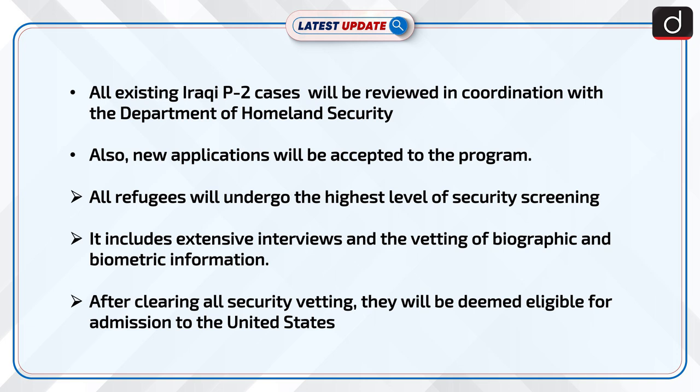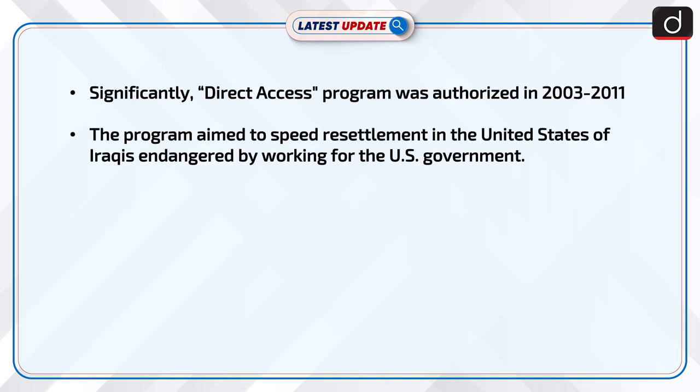After clearing all security vetting, they will be deemed eligible for admission to the United States. Significantly, the direct access program was authorized from 2003 to 2011, and aimed to speed resettlement in the United States of Iraqis endangered by working for the US government.